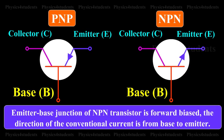When the emitter base junction of an NPN transistor is forward biased, the direction of the conventional current is from base to emitter.